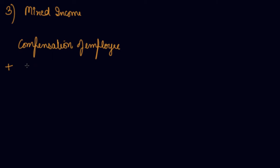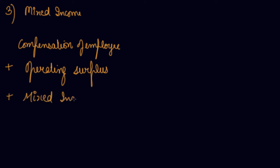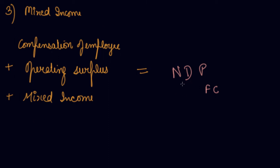When you add compensation of employees, plus operating surplus — that is rent, interest, and profit with its three sub-parts — plus mixed income, you get your net domestic product at factor cost (NDP at FC). The income method gives you the factor incomes generated within the domestic territory of a country.